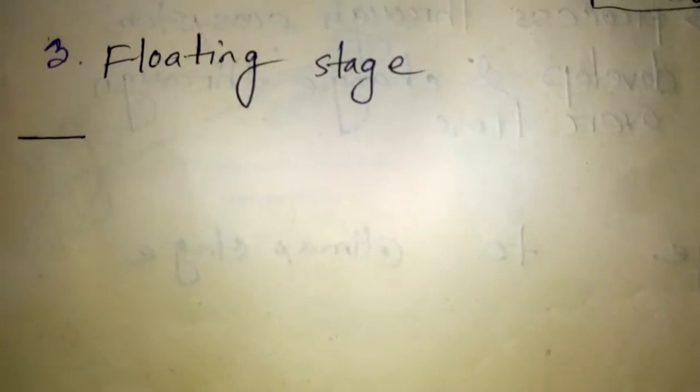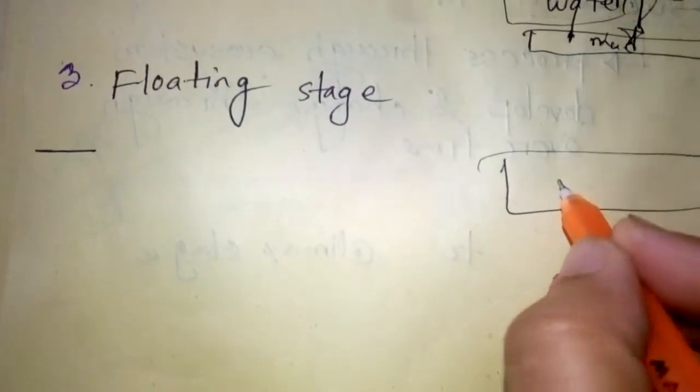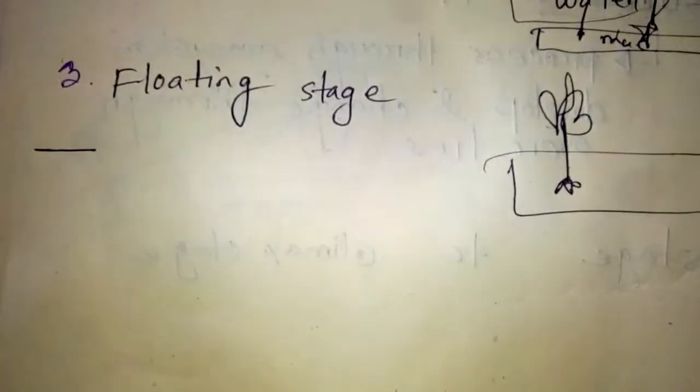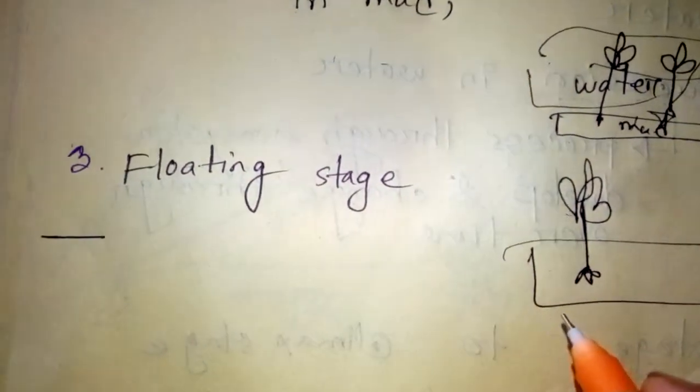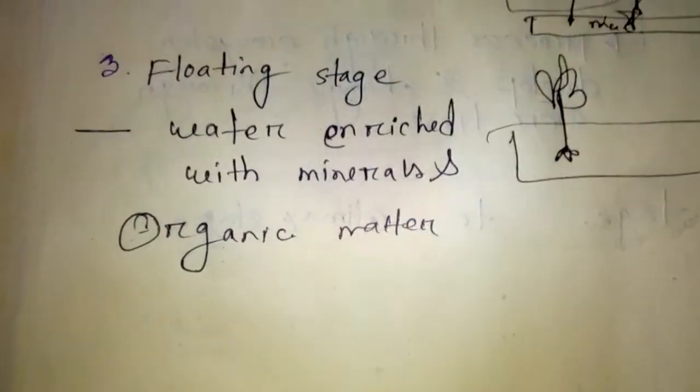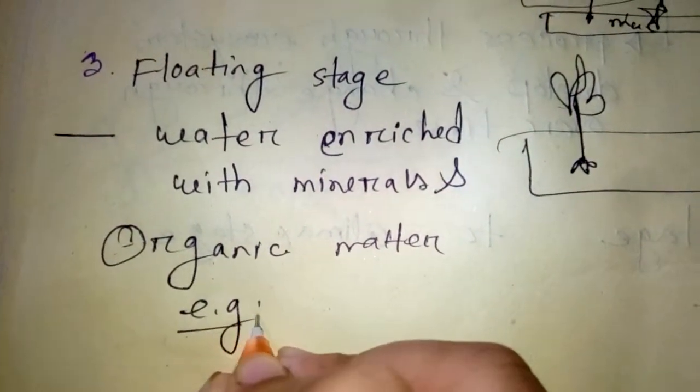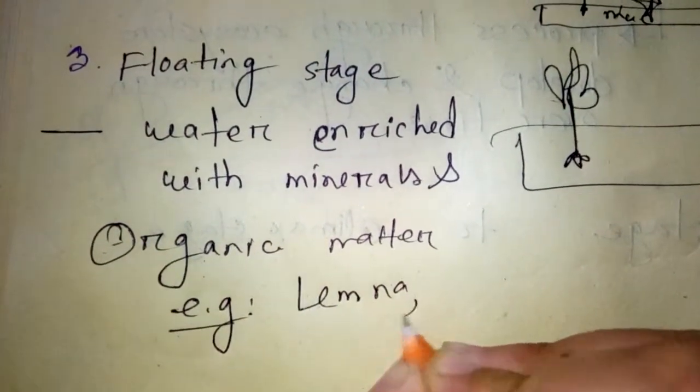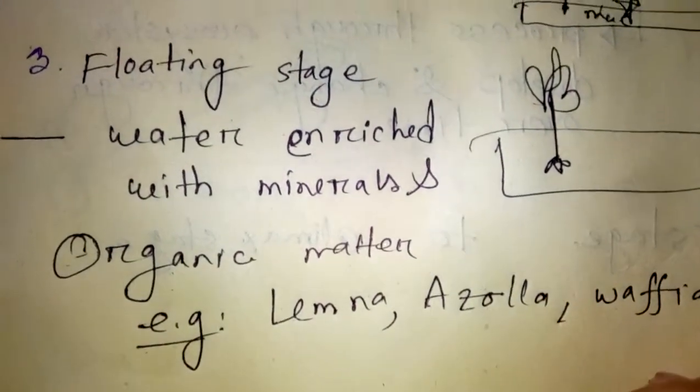Number three is floating stage. Floating stage has floating species in water. When the environment or water is enriched with minerals and organic matter, then floating stage grows up. Examples of floating species are Lemna, Azolla, Wolffia, etc.